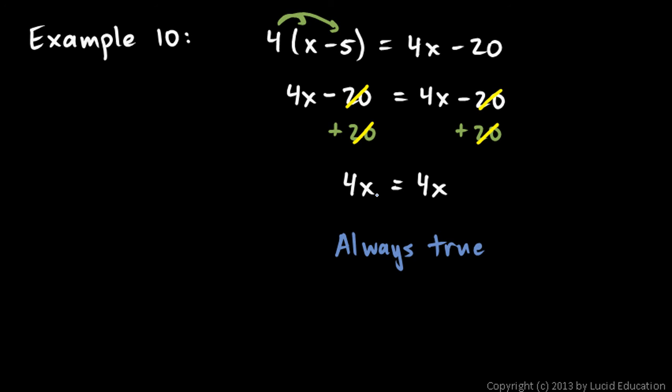You could put in any number for x to the left side and that same number for x on the right side and that equation would work. The left and the right side would be equivalent. And we have a name for this. An equation that is always true for any value of the variable is called an identity.